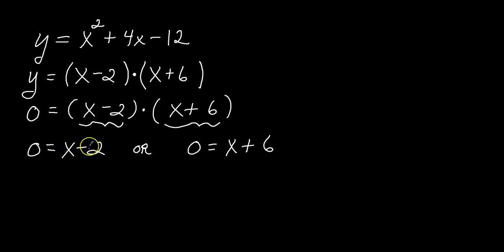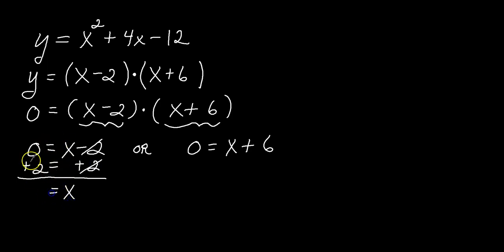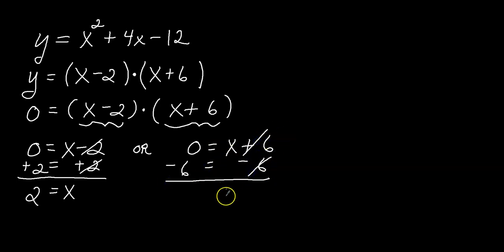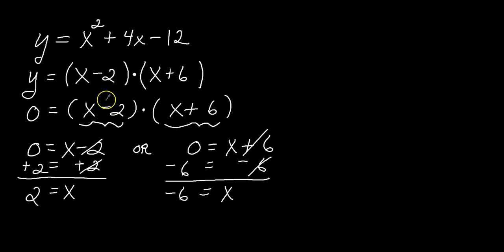I'll solve each equation for x to find the x-intercepts. Adding 2 to both sides of the first equation gives x equals 2. Subtracting 6 from both sides of the second gives x equals negative 6. So my x-intercepts occur at 2 and negative 6. A shortcut: just take the opposite of the numbers in the factored form — the opposite of negative 2 is 2, and the opposite of 6 is negative 6.